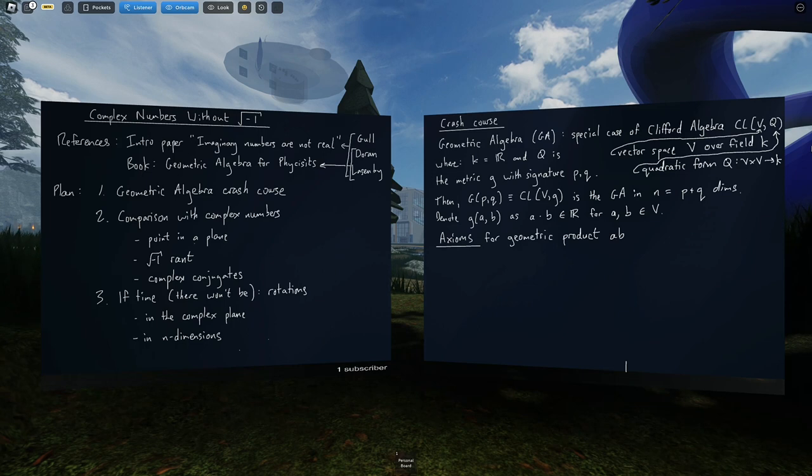I'm also drawing from a book called Geometric Algebra for Physicists by Doran and Lazenby. Anthony Lazenby was my PhD advisor, which is how I got into this in the first place, and it was quite useful during my PhD.